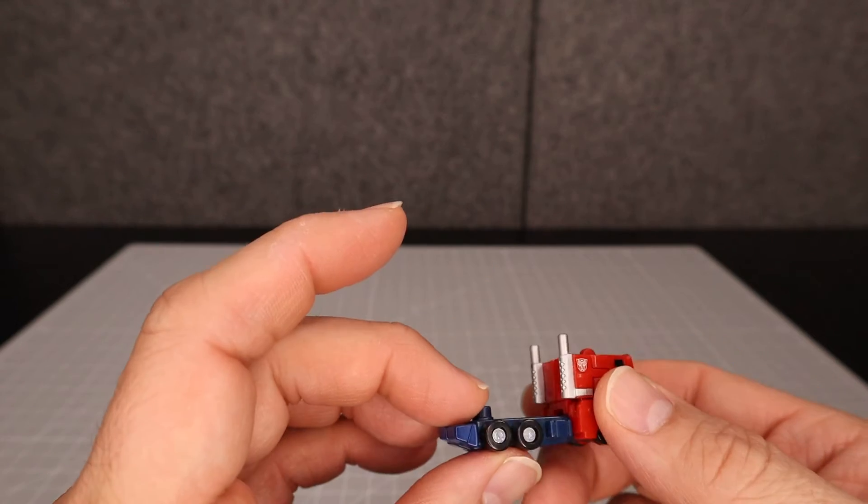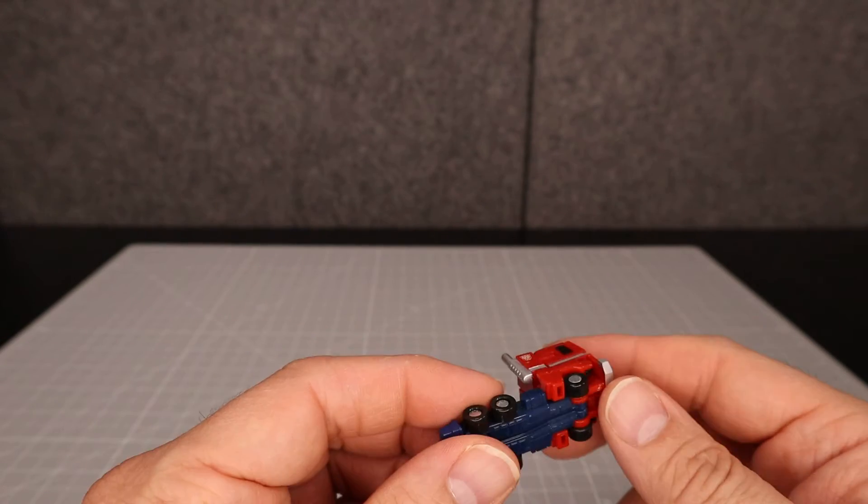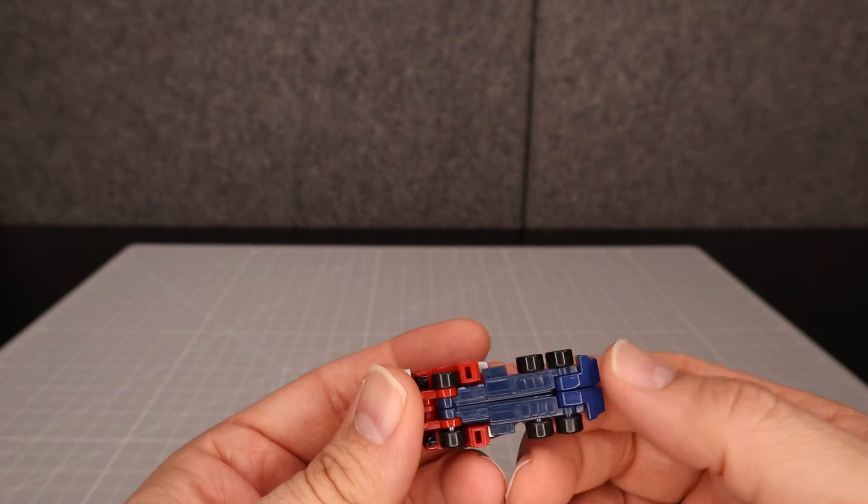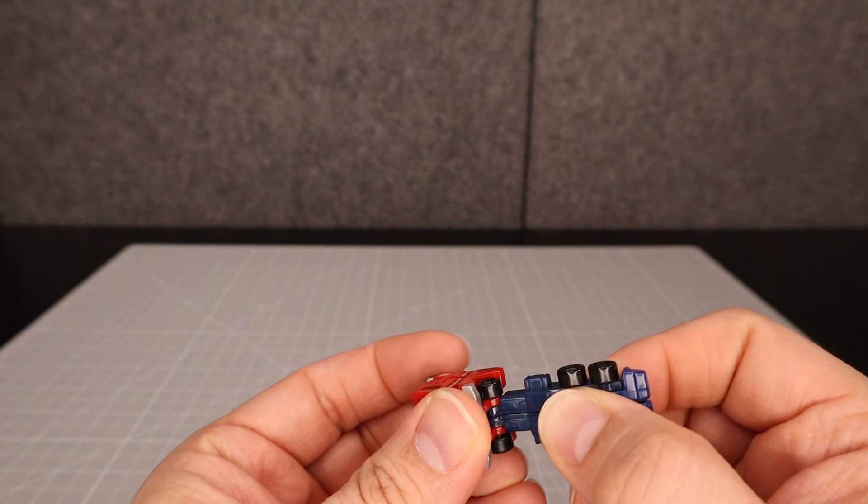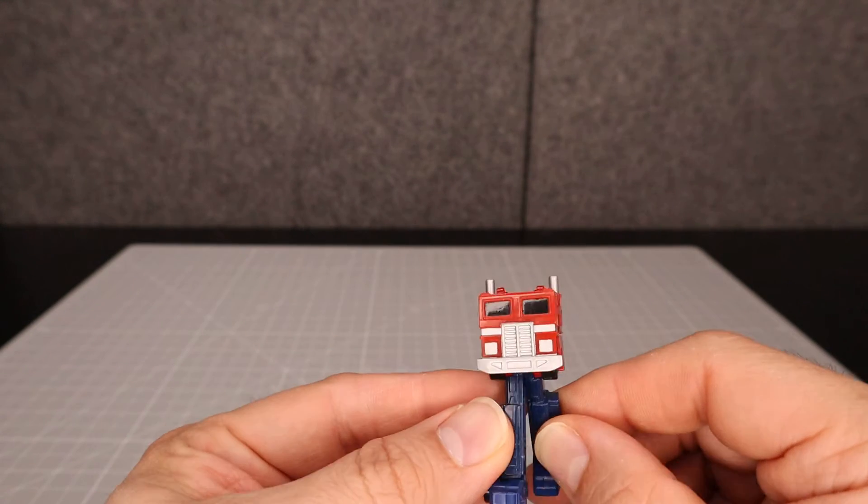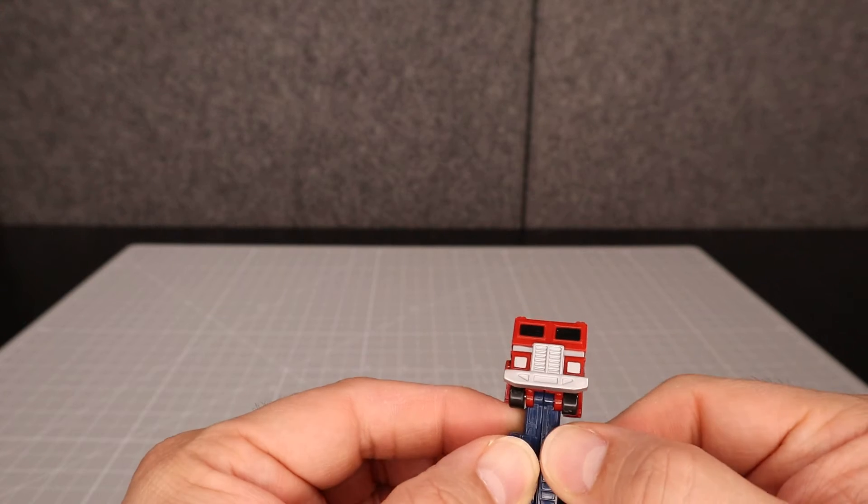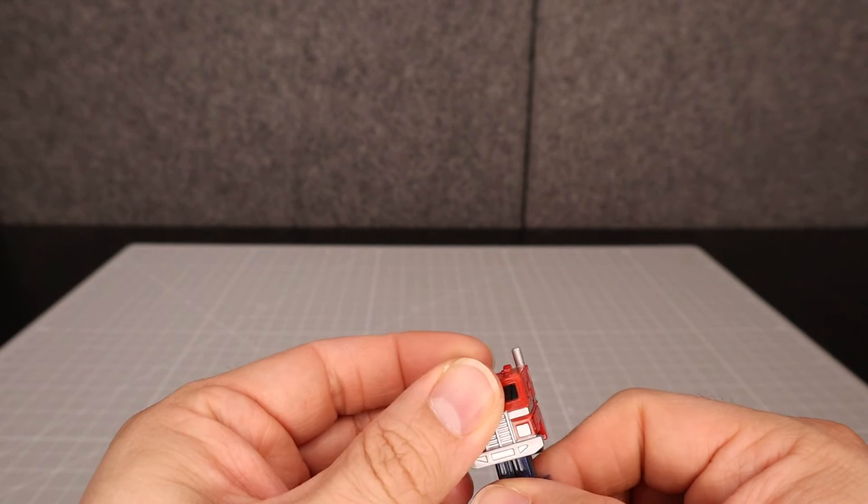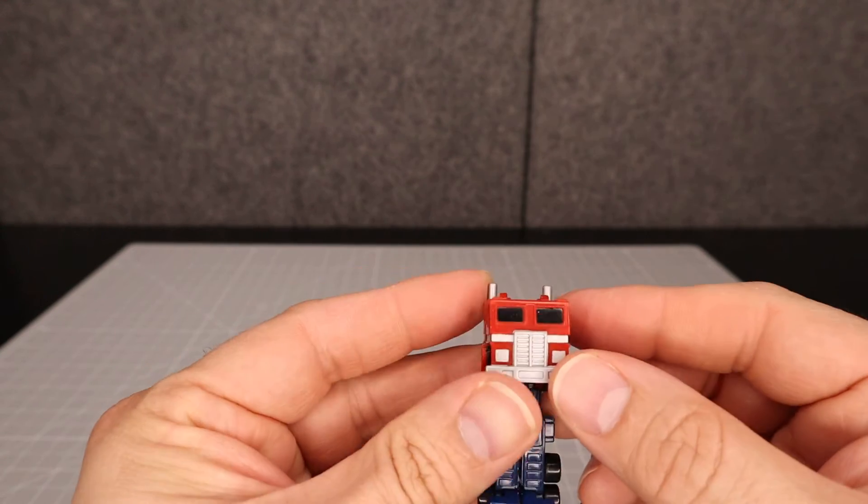So let's get on with the transformation of this. The first thing we're going to do is bring his legs down. They don't really split, but you can pull them off and they are split in half, but they don't really pull apart. I don't want to do it because this is a very fragile little thing.